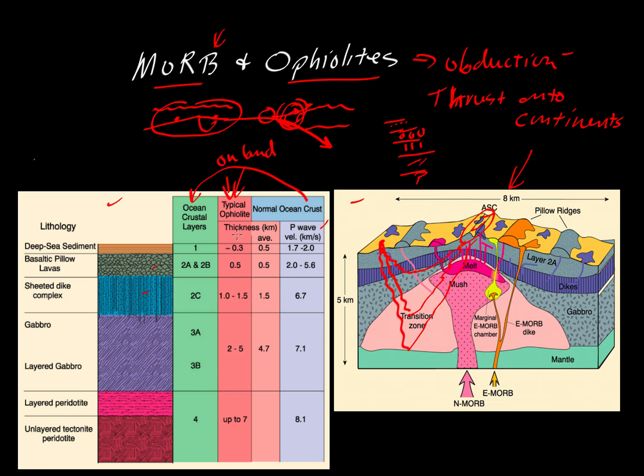Notice that these thicknesses that we see on land are much thinner than what we usually see or what we infer from the seismic studies. We think the actual oceanic crust, for example, has 4.7 kilometers of gabbro and layered gabbro, whereas we see a range of two to five kilometers in the typical ophiolite.